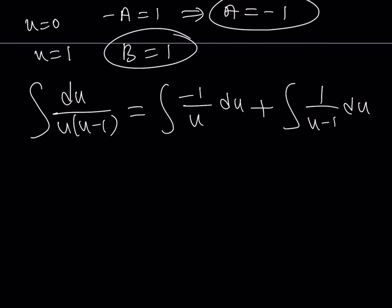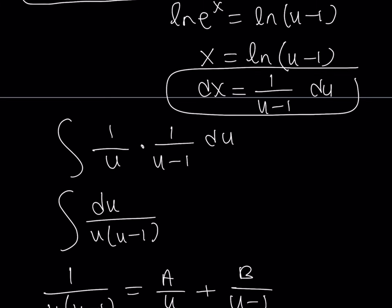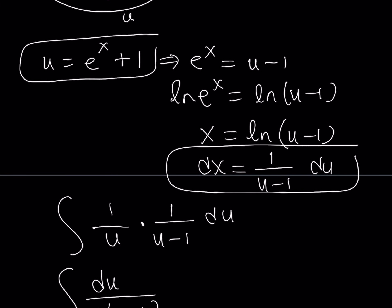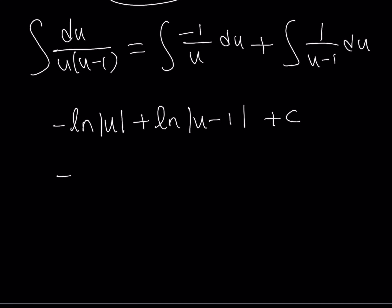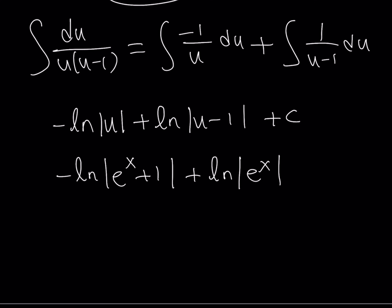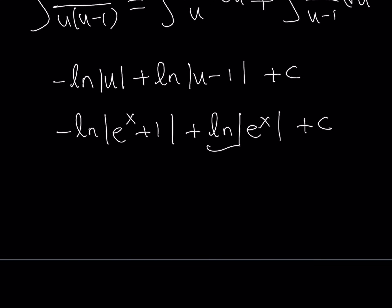Let's integrate these separately. The first integral gives negative ln|u| and the second gives ln|u minus 1|, plus the constant c. Now back-substituting u equals eˣ plus 1, we get negative ln(eˣ+1) plus ln(eˣ+1 minus 1), which is ln(eˣ). Since eˣ is always positive, the absolute values are unnecessary, and ln(eˣ) equals x. So the result is x minus ln(eˣ+1) plus c.